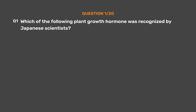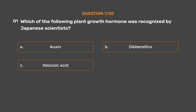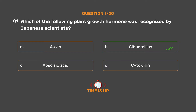Question No. 1. Which of the following plant growth hormones was recognized by Japanese scientists? Option A: Auxin. Option B: Gibberellins. Option C: Abscisic Acid. Option D: Cytokinin. The correct answer is Option B: Gibberellins.